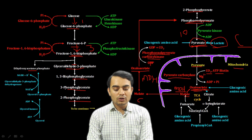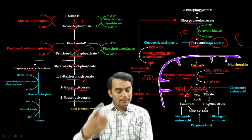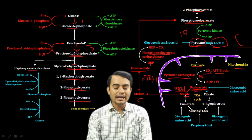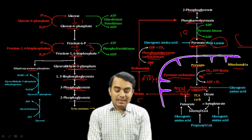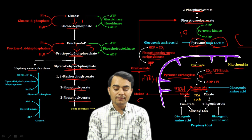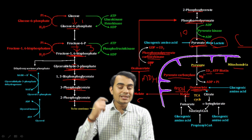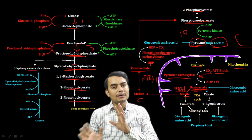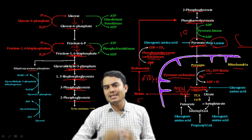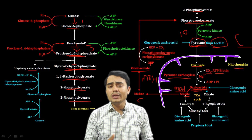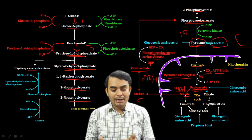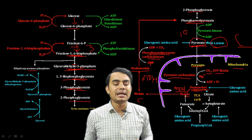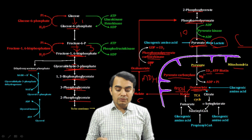From phosphoenolpyruvate onward, all the glycolysis steps up to fructose-1,6-bisphosphate are reversible. So PEP is converted to 2-phosphoglycerate, then 3-phosphoglycerate, then 1,3-bisphosphoglycerate, then glyceraldehyde-3-phosphate, which forms fructose-1,6-bisphosphate. These reversible steps use the same enzymes as glycolysis.